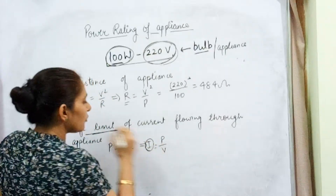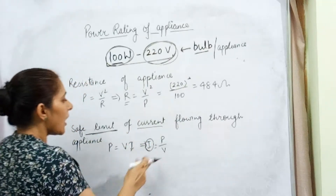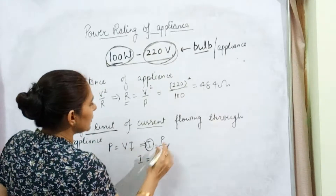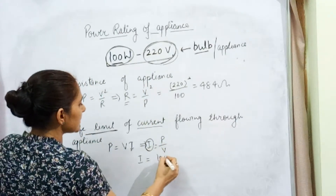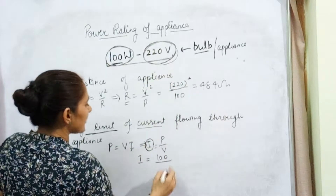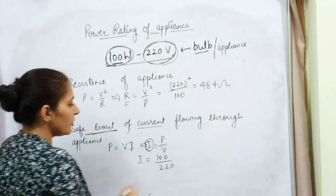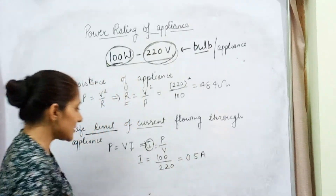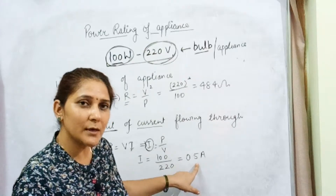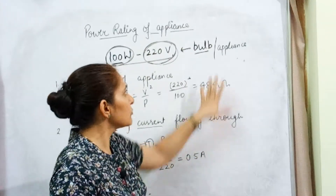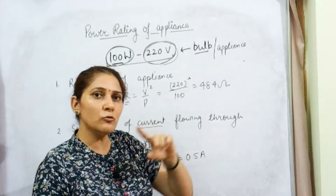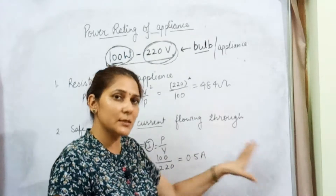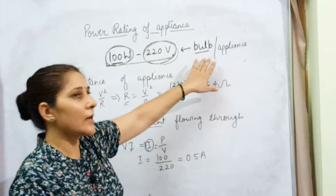This value of I gives us the safe limit of current. I = P upon V: power is 100, potential difference is 220, which gives approximately 0.5 ampere. This means 0.5 ampere is the safe current which can easily flow through the appliance. If the amount of current flowing through the appliance increases beyond this 0.5 ampere, the appliance can be damaged.